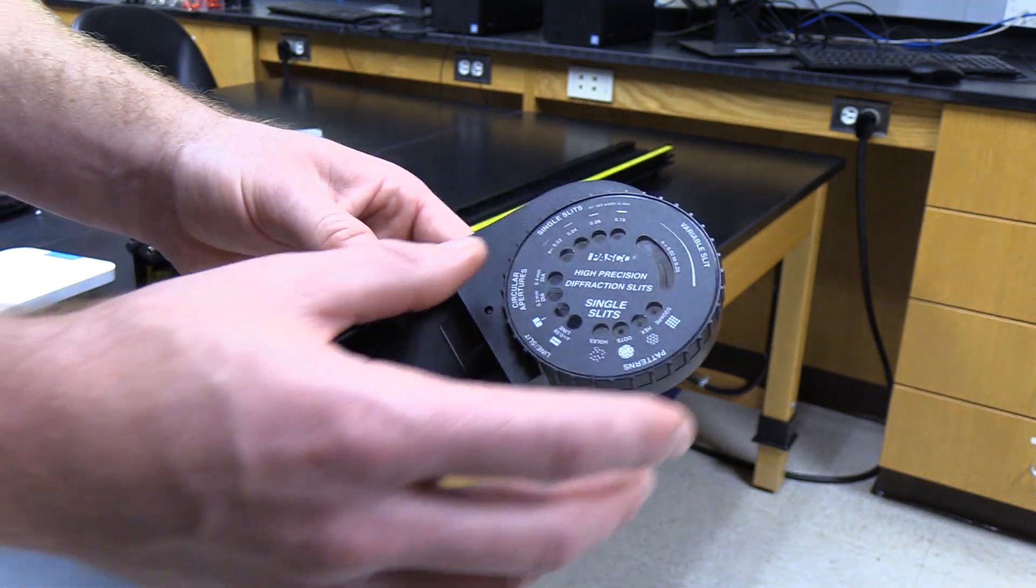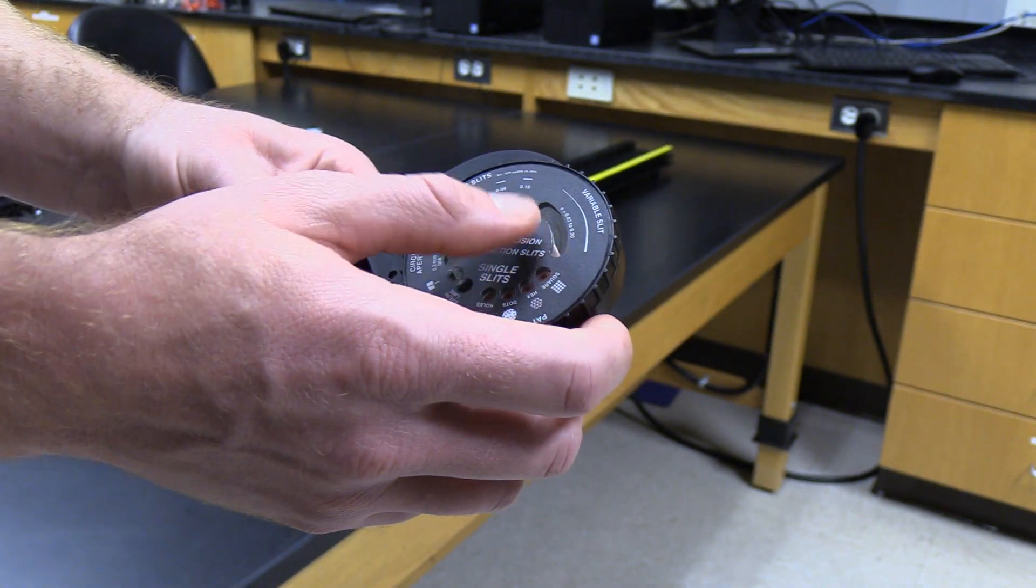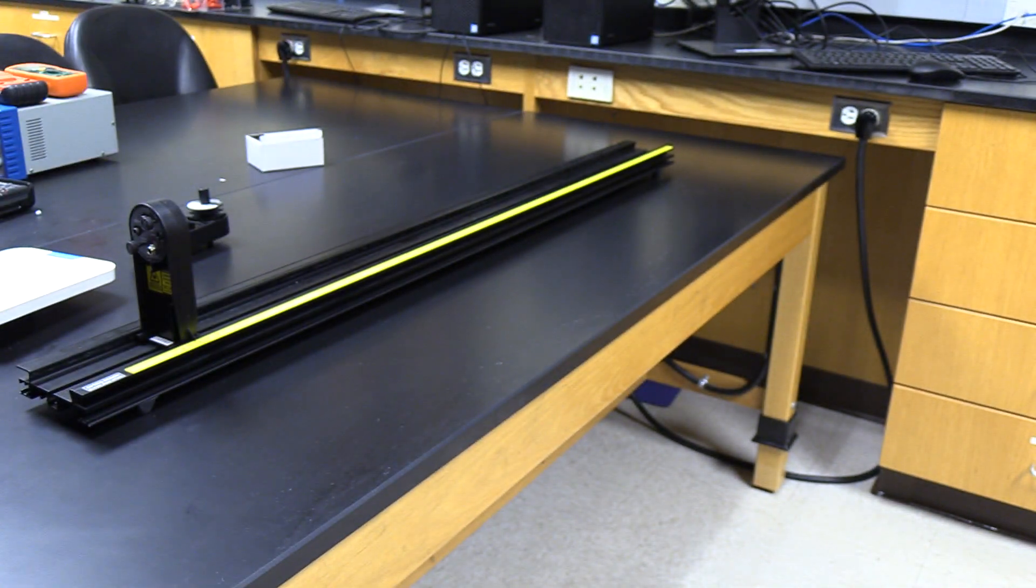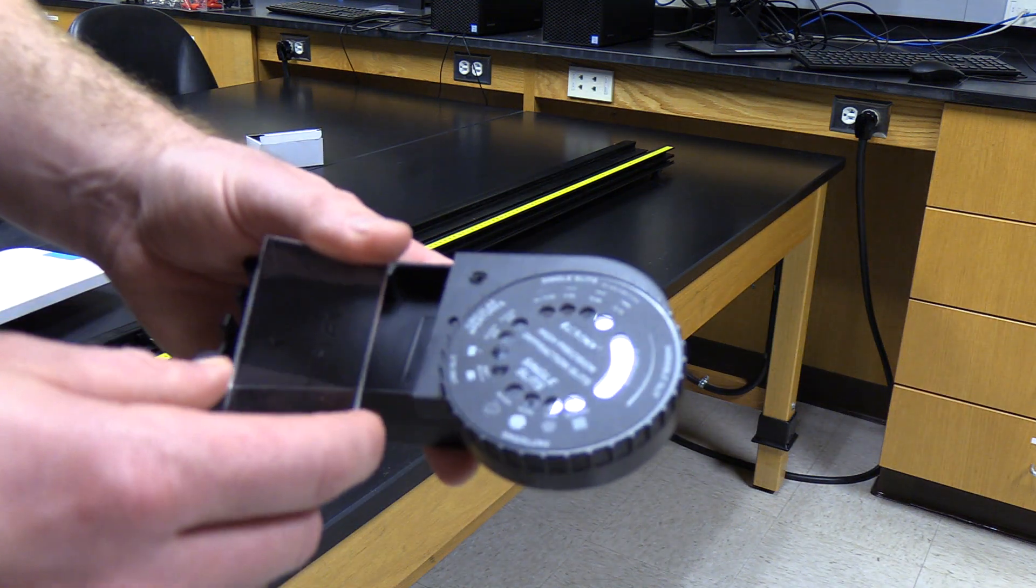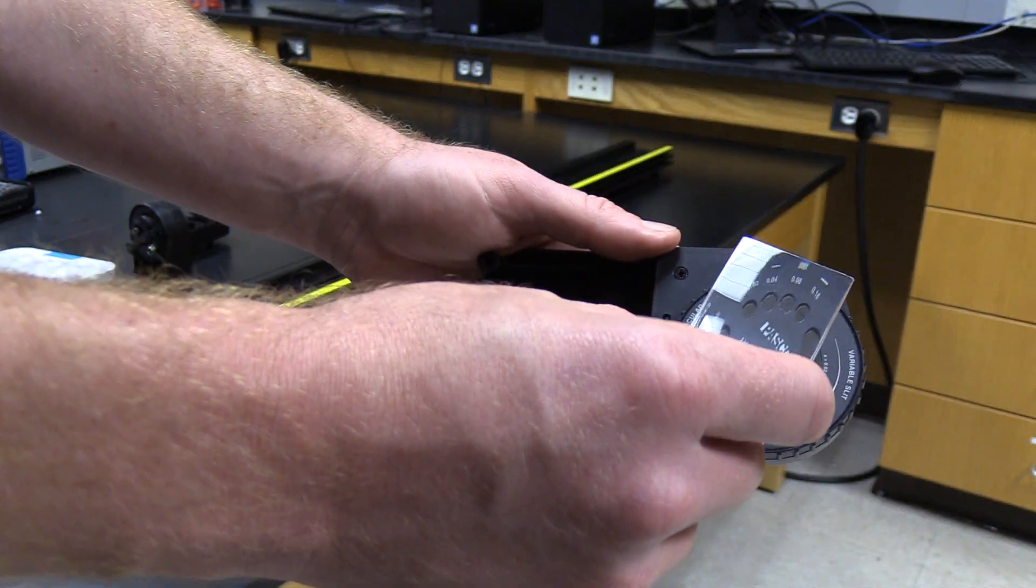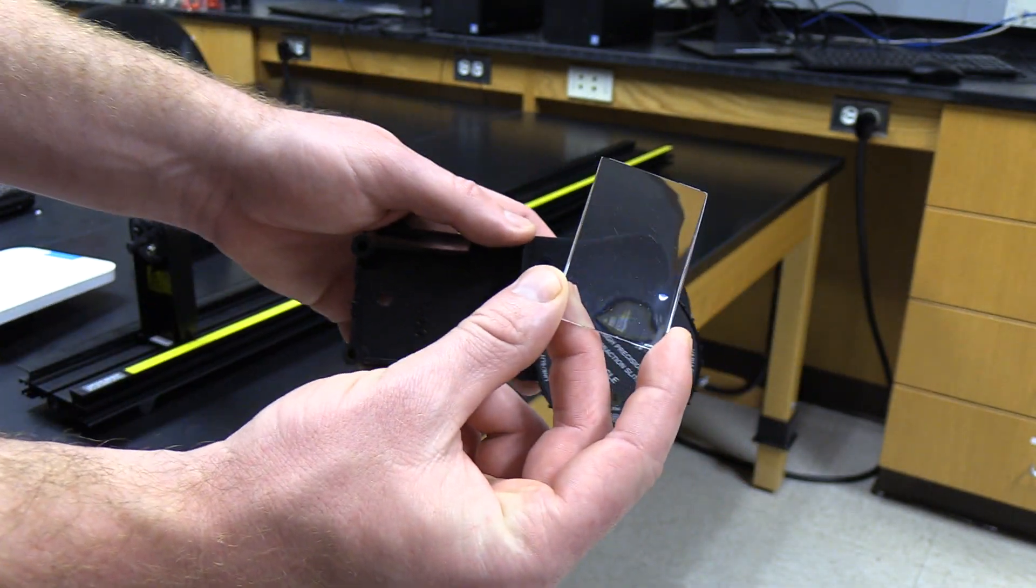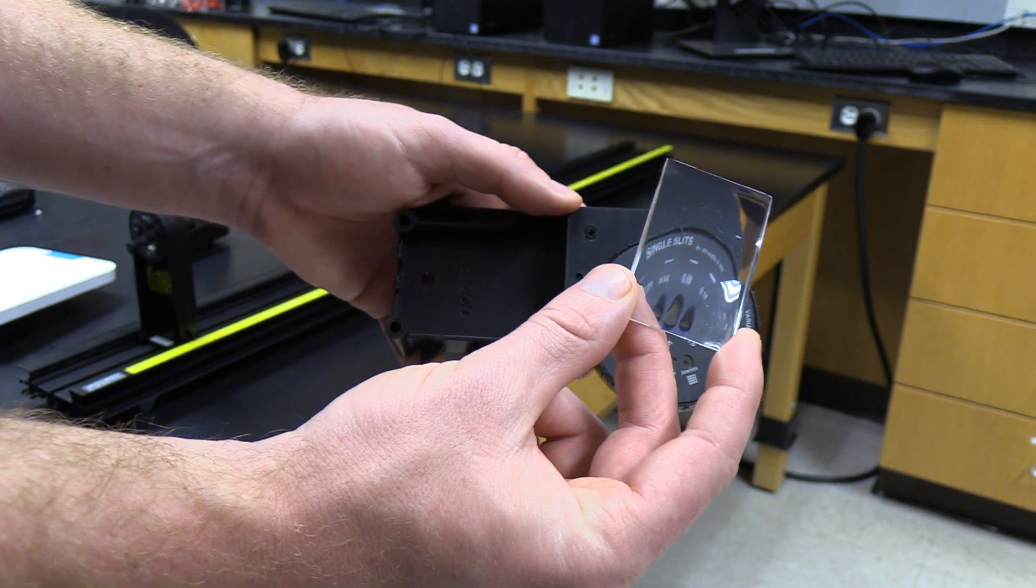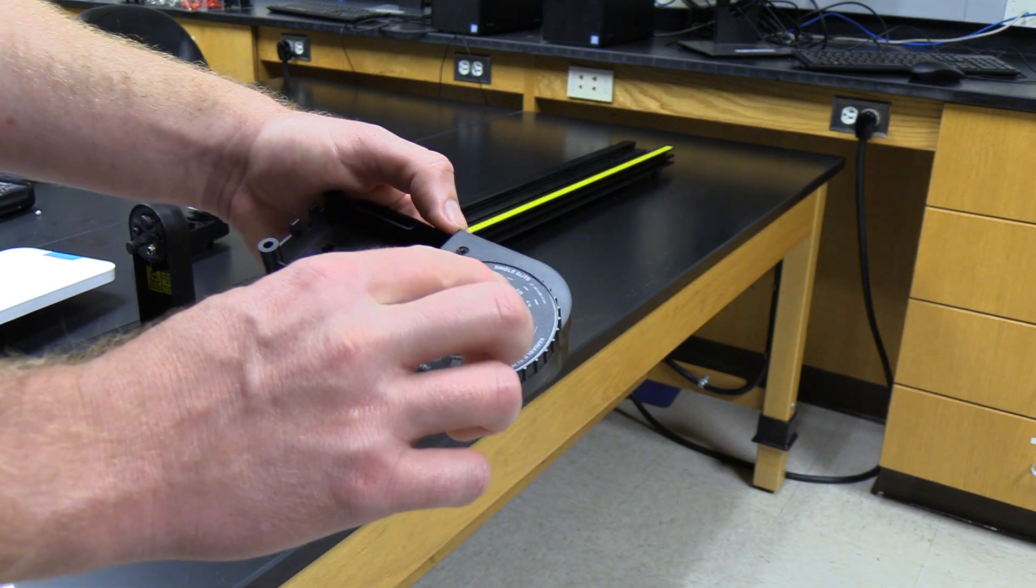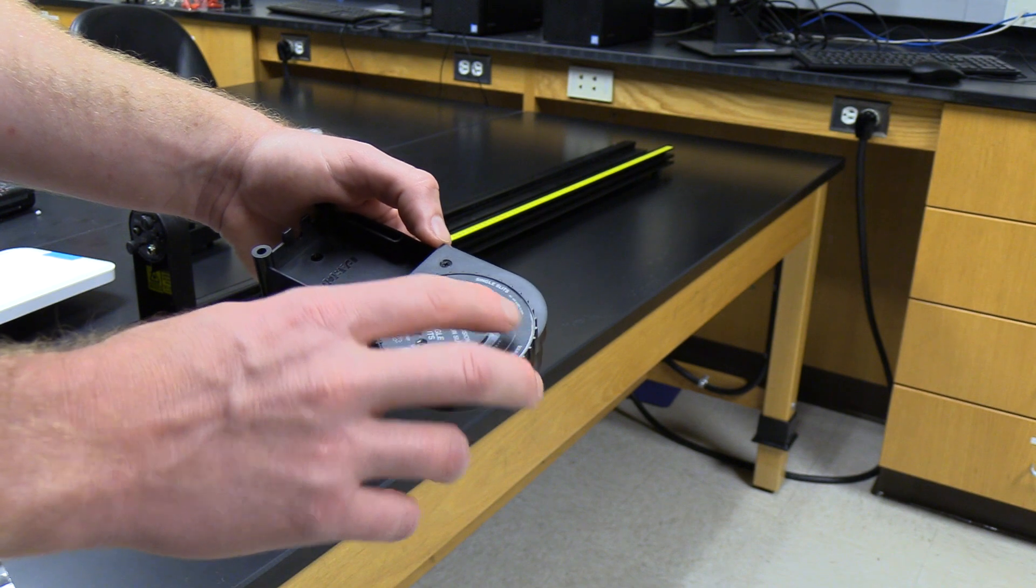The single slit wheel has, besides a variable slit at the top, four single slits. Let me see if I can show you the actual opening here. I'm not sure if that allows you to see the actual opening, but the openings go from 0.02 millimeters all the way up to 0.16 millimeters, so 20 micrometers to 160 micrometers.